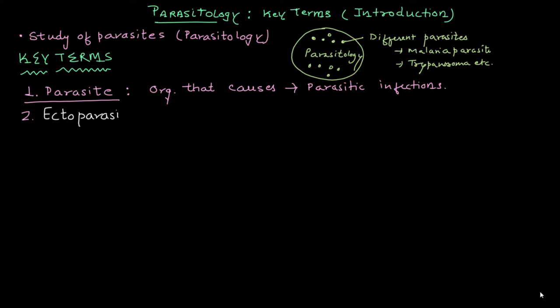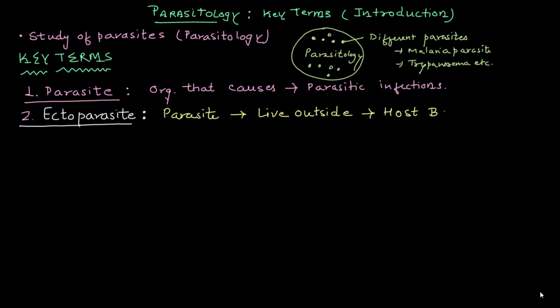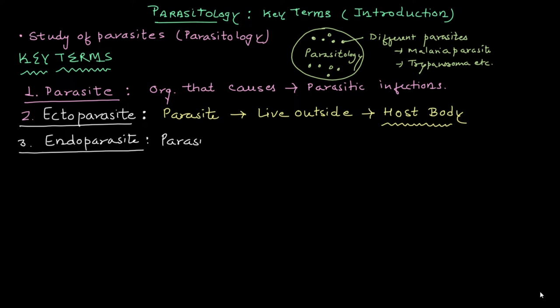In parasitology we have two different categories: ectoparasites and endoparasites. It is very clear from the word that ectoparasite means a parasite living outside the host body or on the host surface. If the parasite is present inside the body, living inside the cells and tissues, we call it an endoparasite. For ectoparasites, organisms like fleas live on the surface and take blood from our body — these are examples of ectoparasites.